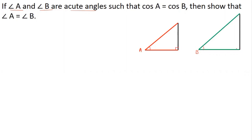Now complete the right triangle. Triangle AQP is a right triangle and triangle BSR is a right triangle. In triangle AQP and BSR, cos A is equal to cos B.